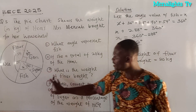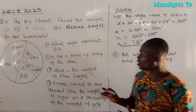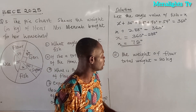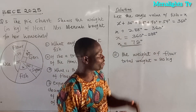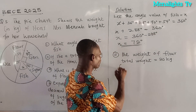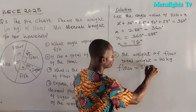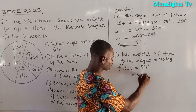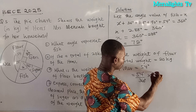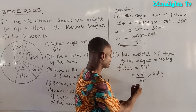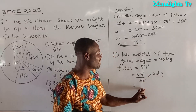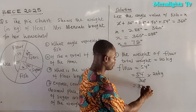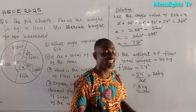Now for part IIA: what is the weight of the flour bought? We know the total weight of all items bought is 20 kg. The angle sector for flour is 54 degrees. So to find the weight of flour, that is 54 over 360 times 20 kg. When you do the calculations, you get 3 kg. The weight of the flour bought is 3 kg.